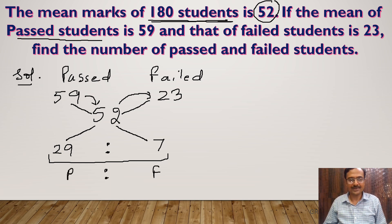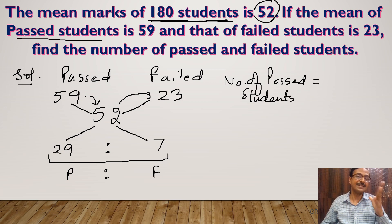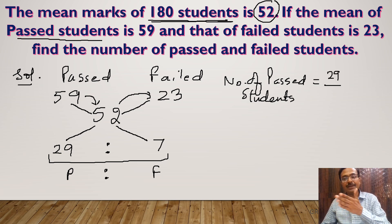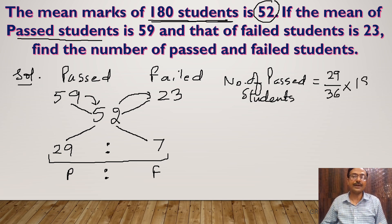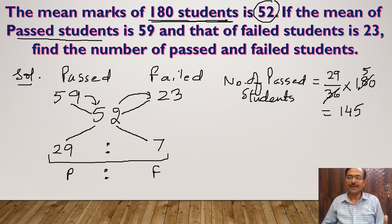This ratio, 29 : 7, is actually the ratio of the passed students to the failed students. To find the number of passed students, 29 stands for passed, so it's 29 out of (29 + 7 = 36), multiplied by the total number of students which is 180. 36 cancels into 180 exactly 5 times, giving the answer: 145 passed students.